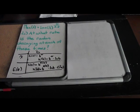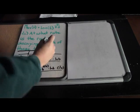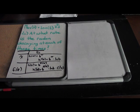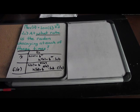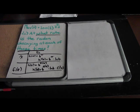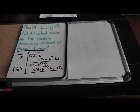Question 2C asks at what rate is the radon decaying at each of these times. We are using the times from Part A: t = 1 day and t = 7 days. 'At what rate' means we are trying to find the instantaneous rate of change, so we need to find the derivative of our function mRn(t) = 100 × (1/2)^(t/3.8).